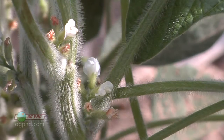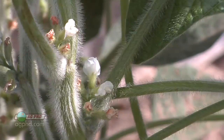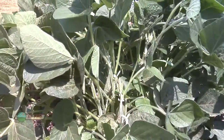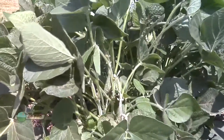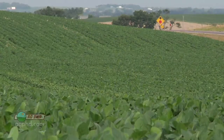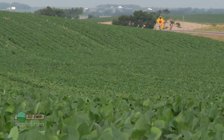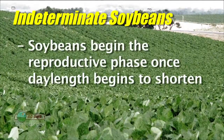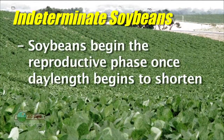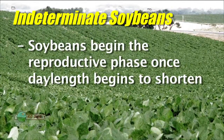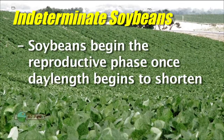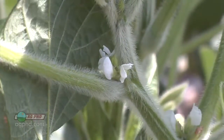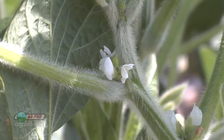As farmers, we discuss this as the reproductive stages of soybeans. Reproductive stages start when that soybean plant starts flowering. At least in our part of the country with the indeterminate soybeans that we raise, when the day length begins to shorten, that's when reproduction is going to kick in. You won't see it exactly on June 22nd, but just a few days after that, you're going to see soybeans start flowering and all those reproductive stages kick in.